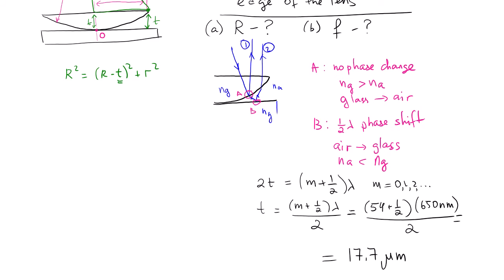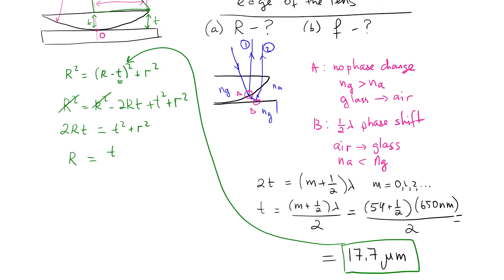Now that I have this value for the thickness, I can use it and solve for R in this equation. Now, before we use it, let's simplify this equation. So R squared equals R squared minus 2RT plus T squared plus r squared. Now R's will cancel out. We have 2 big RT equals T squared plus r squared. From here, big R equals T squared plus r squared divided by 2T.